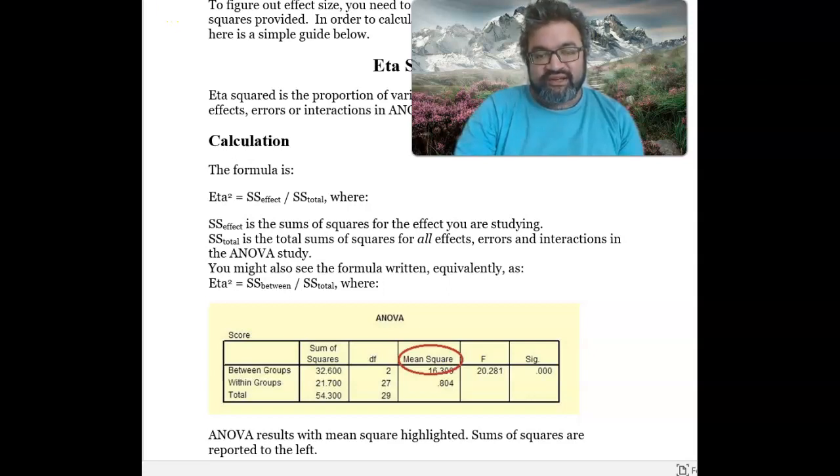Another equation I wanted to revisit—there was an error at the beginning when I was lecturing. For this mean square, you don't divide it by sum of squares. What you do is take the sum of squares and divide it by the total. So here it would be 32.6 divided by 54.3, and that should give you the eta squared.